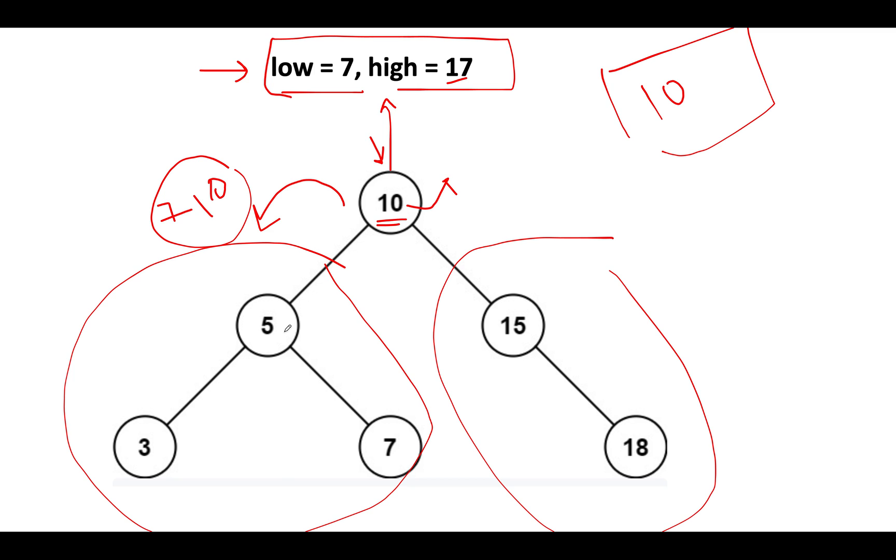Let's continue the process. Next, what do we see? We see the node 5. Does 5 lie within this range? No, 5 is less than 7. So what do we do in such case? We simply move towards its right child and we'll skip the left child in this case, because definitely along its left subtree there won't be any node as per the binary search tree properties.